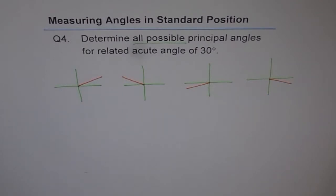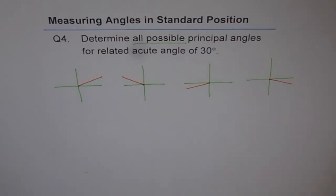In some books it is written that the related acute angle is the angle of the terminal arm with the horizontal axis in quadrants 2, 3, and 4 — so they have not included quadrant 1. Well, that creates an ambiguity. Related acute angle is the acute angle in all 4 quadrants, and sometimes we call that the reference angle. The related acute angle between the terminal arm and the horizontal axis — no matter which quadrant it is in.